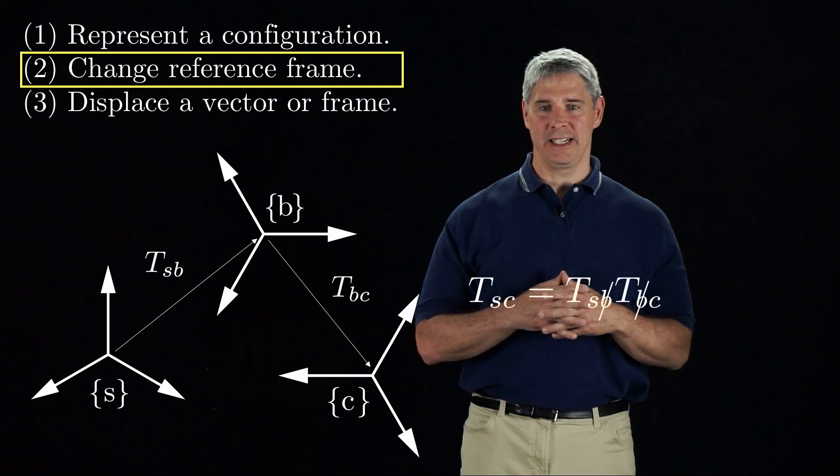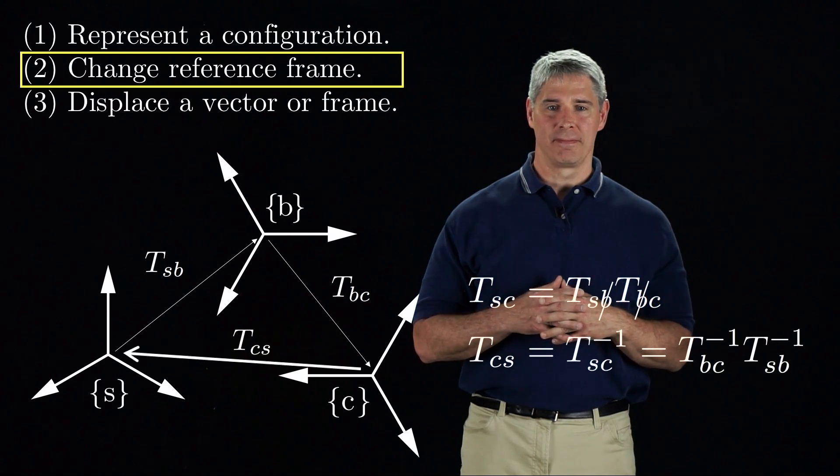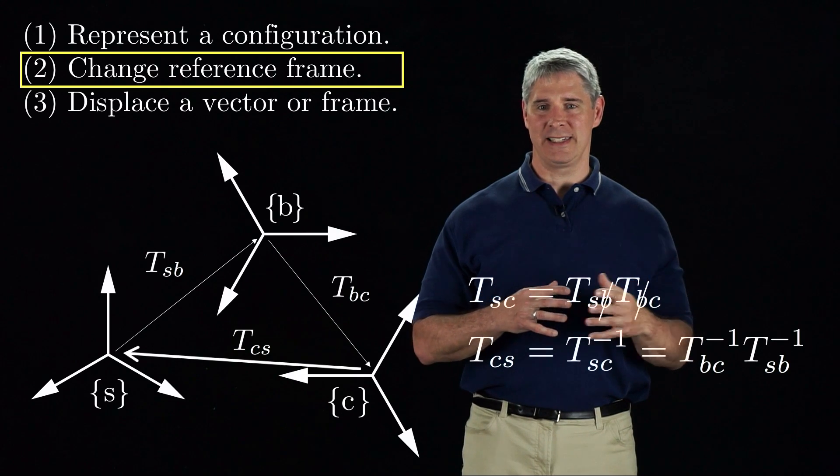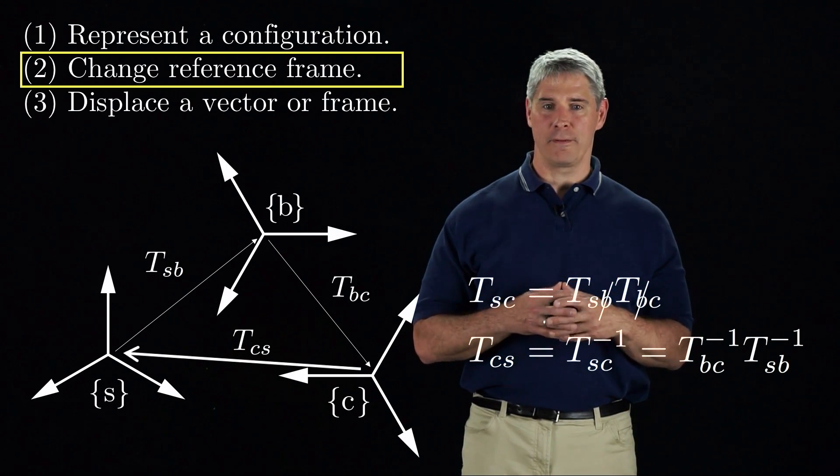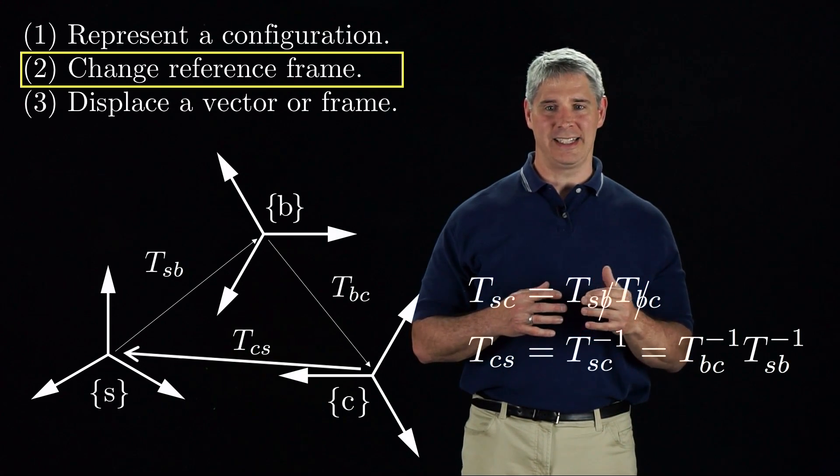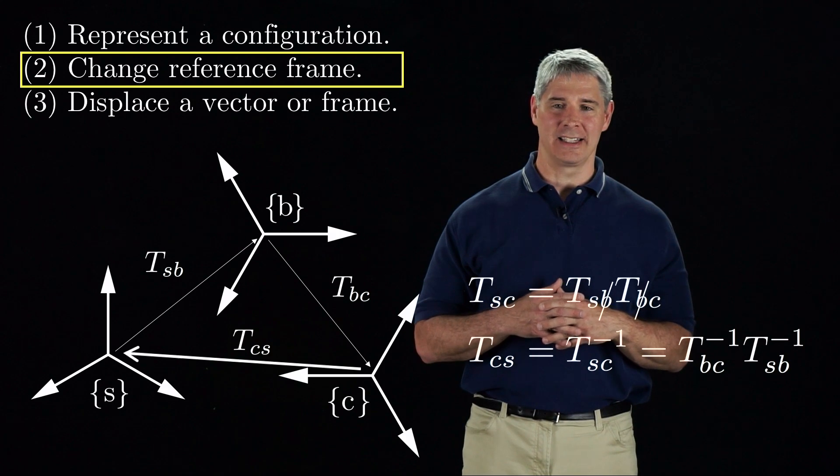The inverse of TSC is TCS. Just as we followed TSB and then TBC to get to TSC, we can follow TBC inverse and TSB inverse to get TCS.